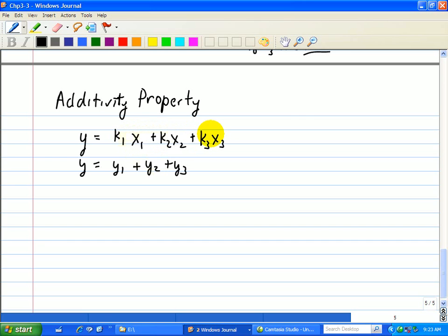Now we can show this in block diagram form, where I have an input X1 gets multiplied by K1. The output of this block is K1 X1, and that's just Y1, and we're going to feed it through a summer.